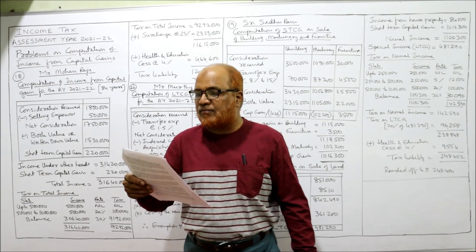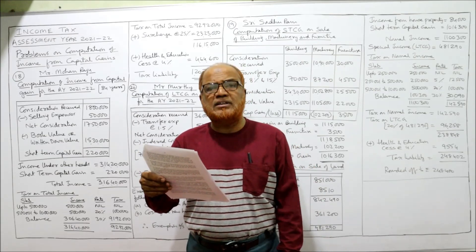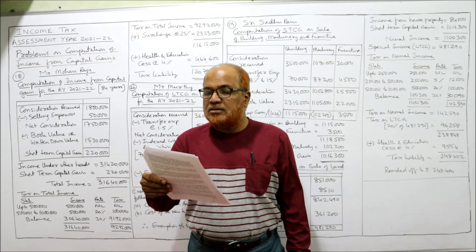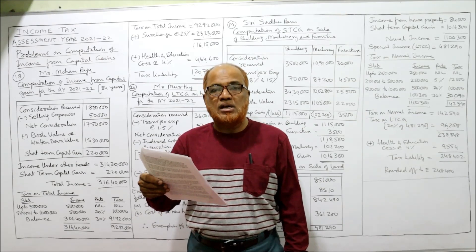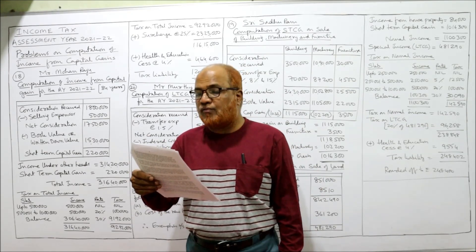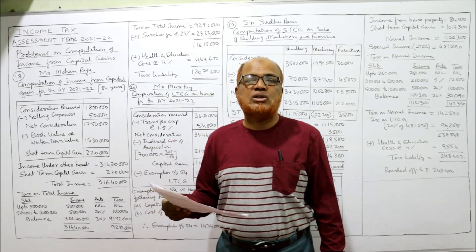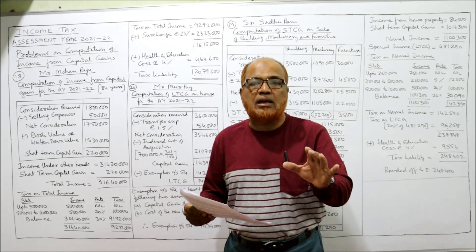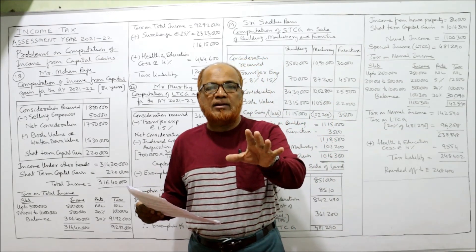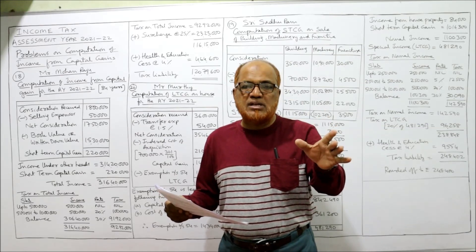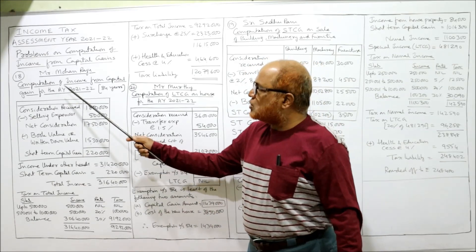The building was sold during the previous year for 18 lakh — the consideration received is 18 lakh — and selling expenses are 50 thousand. Income from other heads is 3 crore 14 lakh 20 thousand. Mr. Mohan Raju, super senior citizen, 84 years, is having income from other heads of 3 crore 14 lakh 20 thousand. We have to compute the tax liability, but first we need to find the short-term capital gain on sale of building. In working notes, you must write: it is a depreciable asset used in the business, so gain arising is short-term capital gain.